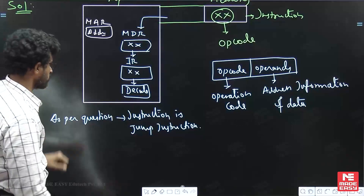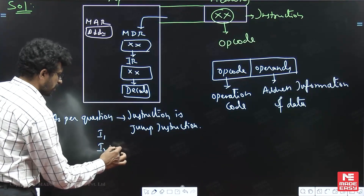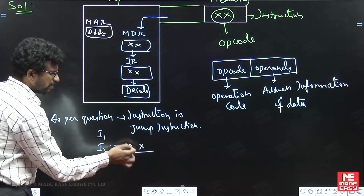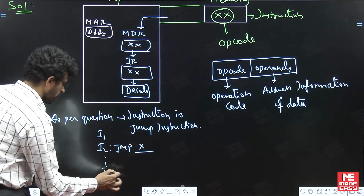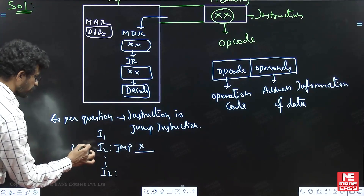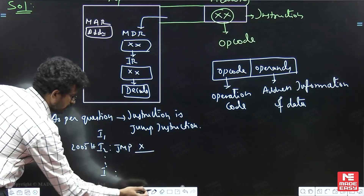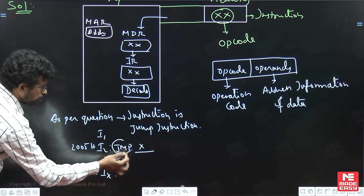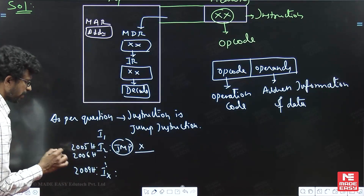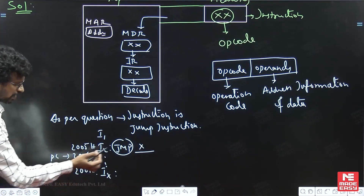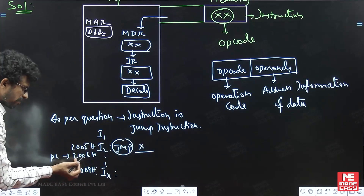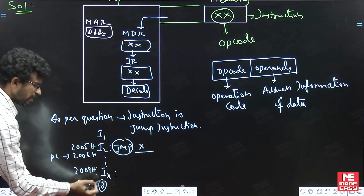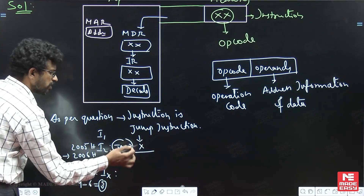In PC relative addressing mode, if the program is at some address — let us say some instruction is at address 2005 and we need to jump to address 2009 — after the opcode fetch, the program counter value is, say, 0006. The target is 2009. From the current PC value to the target address, the distance is 2009 minus 6 equals 3. This value of 3 is the offset — the displacement value — stored in the instruction field, reducing the number of bits required for coding.